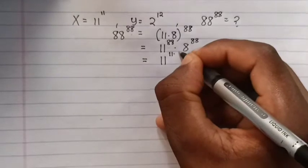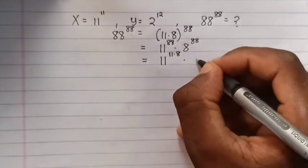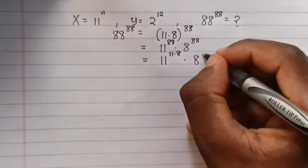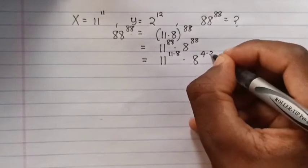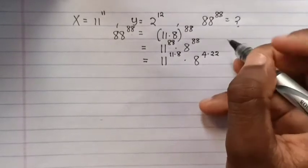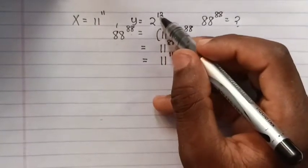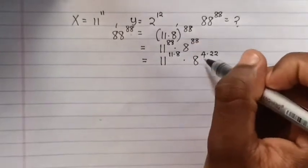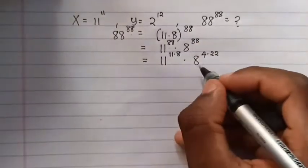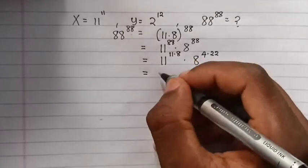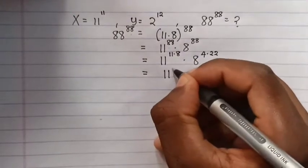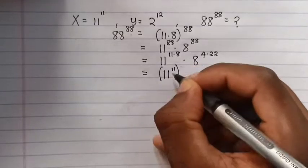We can write 11 to the power of 88 times 8 to the power of 88. Since 8 to the power of 4 times 22 equals 2 to the power of 12, we can get 2 to the power of 12 easily. Then this one is the same as 11 and we put it inside the bracket.